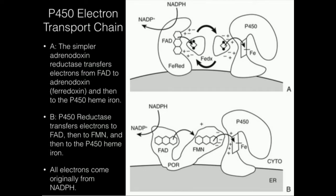Welcome back to cytochrome P450. We're going to talk in this video about how cytochrome P450 receives the electrons that it uses to activate molecular oxygen and ultimately add hydroxyl groups to different molecules. This electron transfer requires one of two auxiliary enzymes, depending on which system you're talking about, but in general in mammalian P450 systems, they do require that extra enzyme. We're going to see a series of electron transfers — this is called the cytochrome P450 electron transport chain.